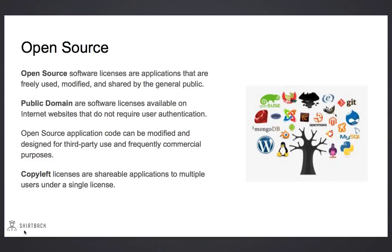Open-source software licenses are applications that are freely used and shared by the general public. Public domain are software licenses available on internet websites that do not require any user authentication. Open-source application code can be modified and designed for third-party use. Copy-left licenses are shareable applications that multiple users can access under a single license.